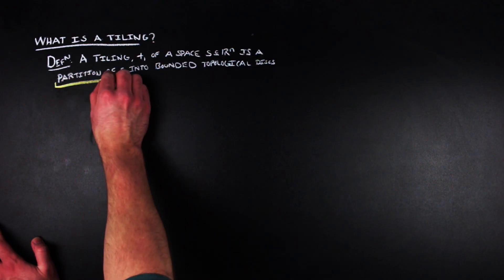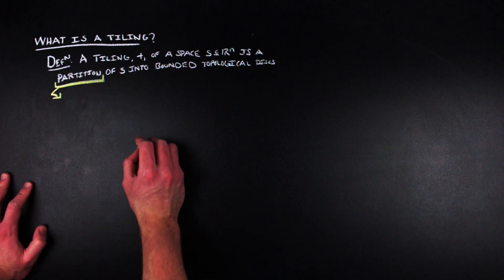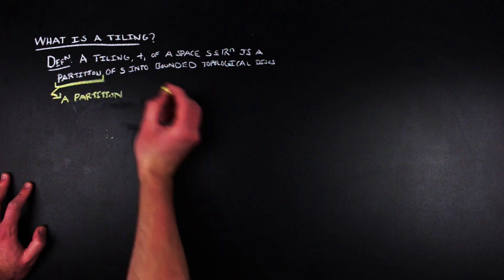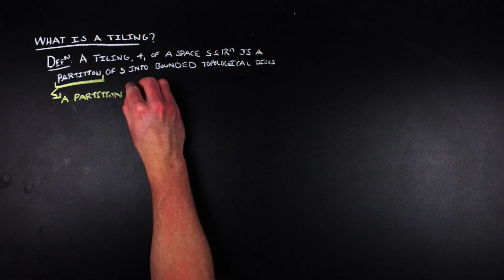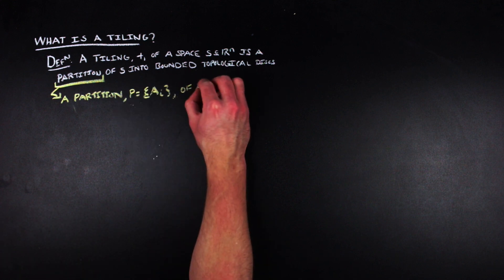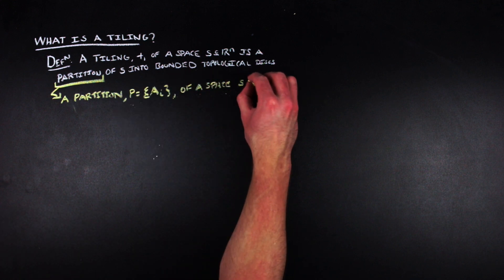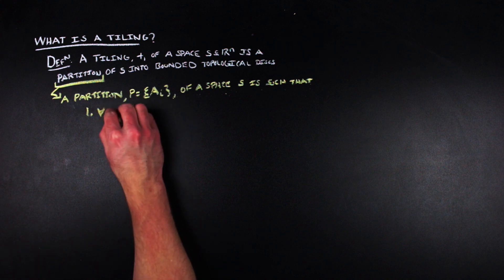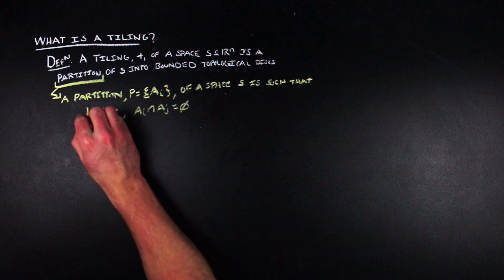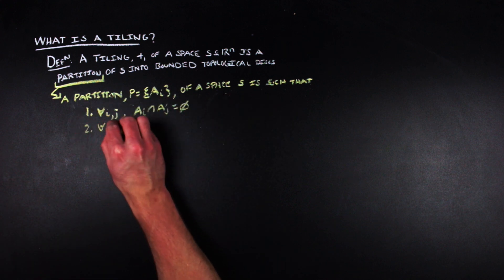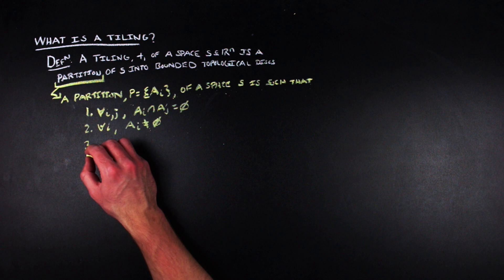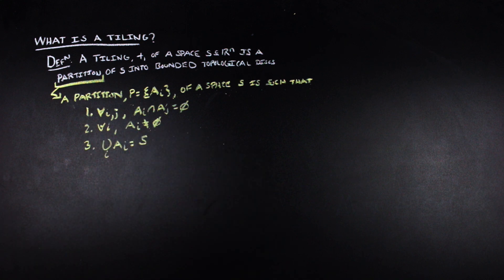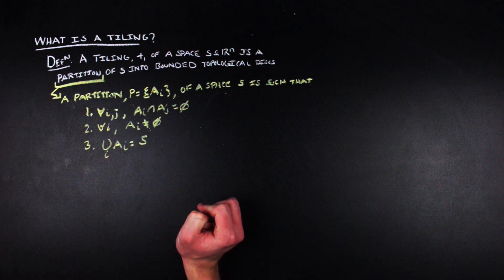First, we're going to focus on partitions. A partition is a collection of disjoint subsets of a space that union together to give the whole space, with the following properties: one, the sets themselves are pairwise disjoint; two, none of the sets are empty; and three, those sets union together to give the whole space.